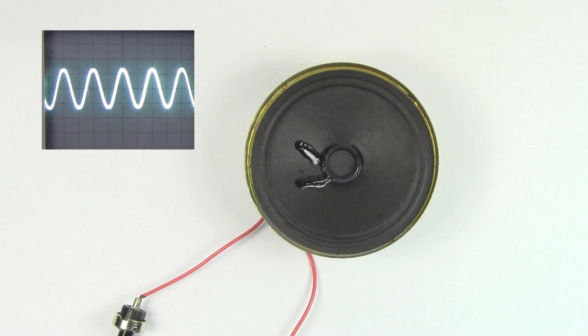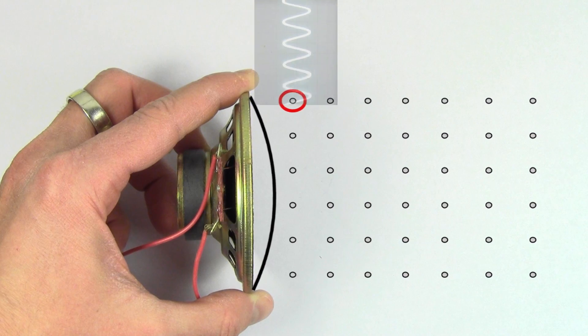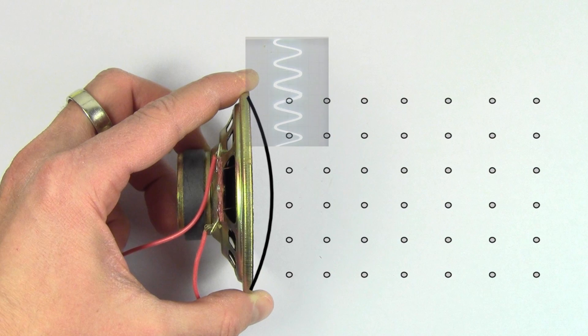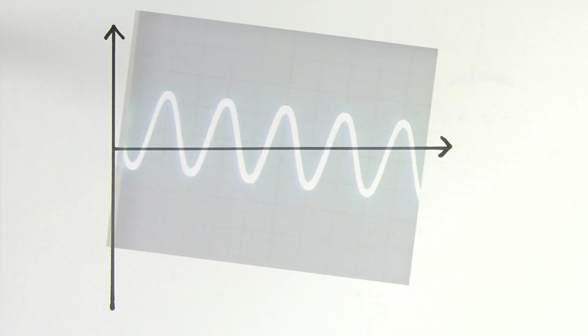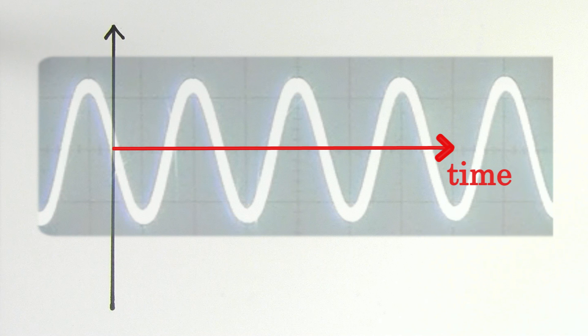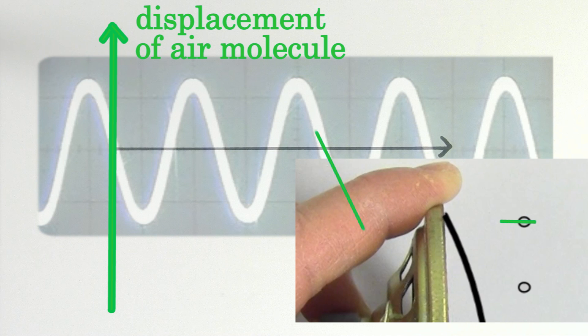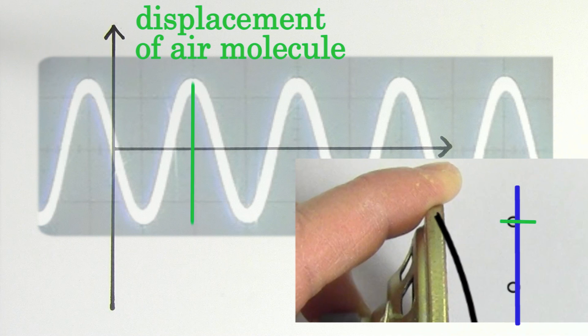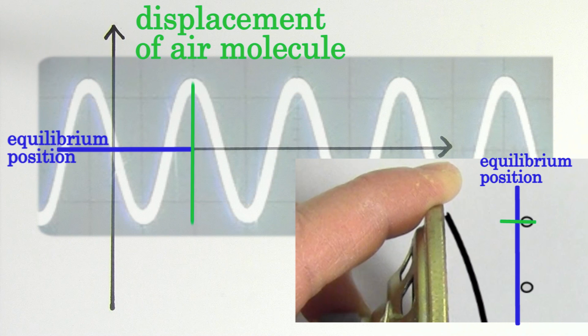We say that this shape represents the sound wave because if we focus on a single molecule of air, we see that it moves back and forth just like a sine or cosine graph. The horizontal axis here represents time and the vertical axis can be thought of as representing the displacement of that air molecule as it oscillates back and forth. The center line here represents the equilibrium position or undisturbed position of that air molecule.